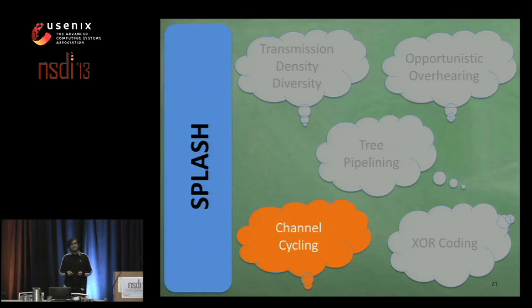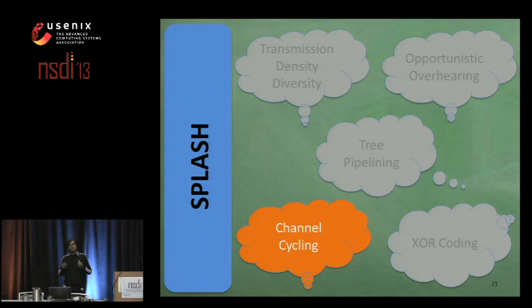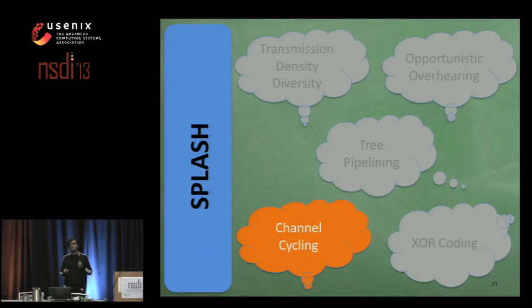It is well known that the quality of channels varies over both time and location. In order to minimize the effect of poor channel quality, we use channel cycling in SPLASH.